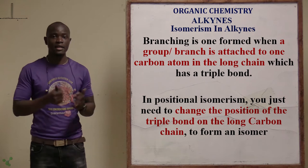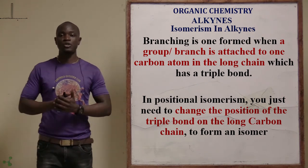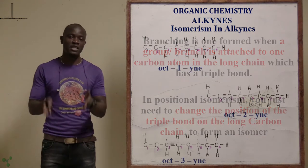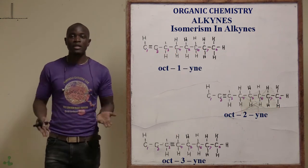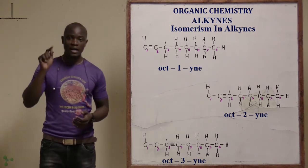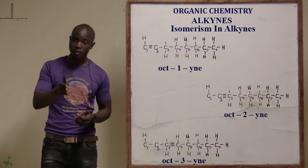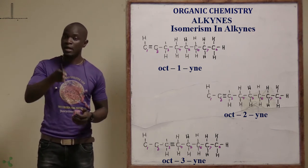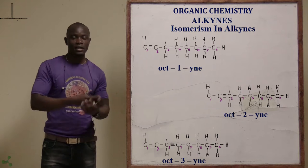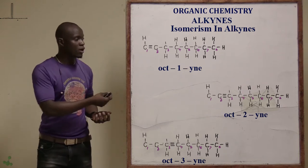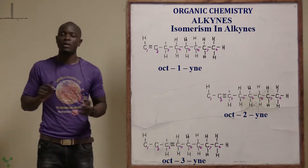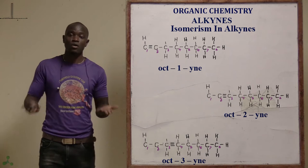The other type of isomerism is positional isomerism. In positional isomerism, you only change the position of the triple bond. For example, if we have oct-1-yne, meaning the triple bond appears immediately after carbon number one, you simply remove the triple bond from carbon one and place it at carbon two — that is an isomer. Remove from carbon two, place it at carbon three — that is also an isomer. That is positional isomerism.